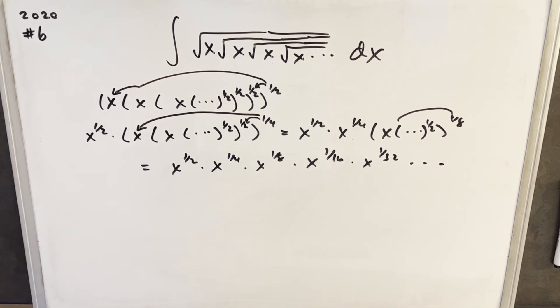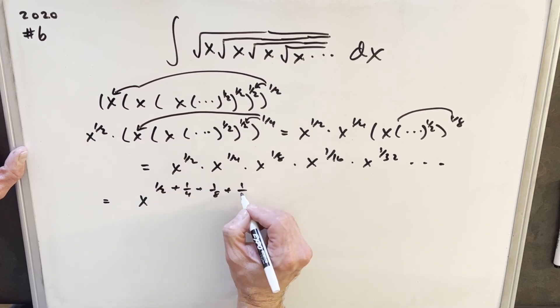At this point, we still have this infinite expression, maybe a little hard to deal with. But what we can do is now just with our exponent rules, we're multiplying, everything's X, we can just start adding exponents. So this is the same thing as X to the one half plus one fourth plus one eighth, etc.